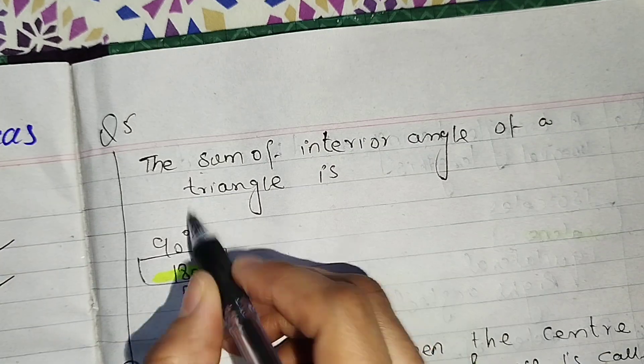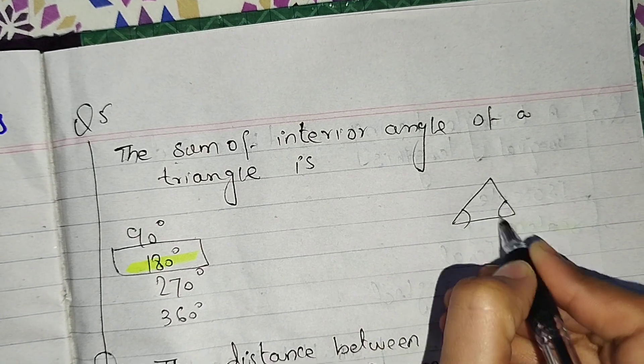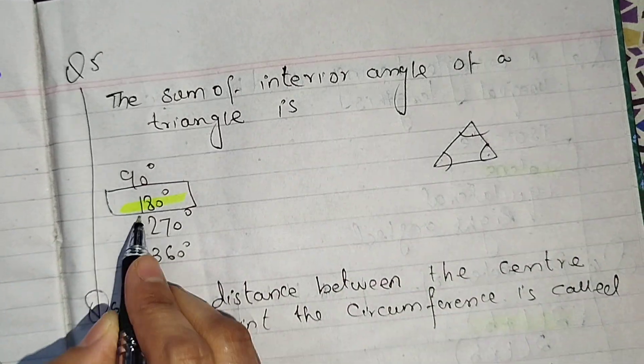Next, the sum of interior angle of a triangle. You know how much interior angle of a triangle, 60, 60, 60 equals 180.